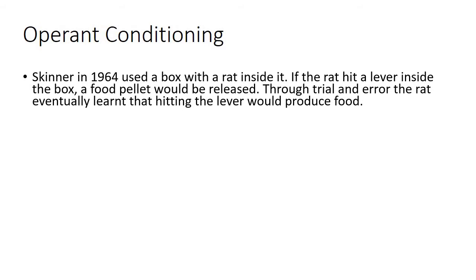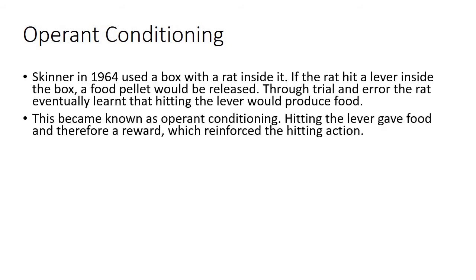So we're going to look at each of these learning methods in isolation. The first one is operant conditioning. In 1964, Skinner used a box with a rat inside it to work out operant condition learning. If the rat hit a lever inside the box, a food pellet would be released. Through trial and error the rat eventually learned that hitting the lever would produce food. This became known as operant conditioning. Hitting the lever gave food, and therefore the reward reinforced the hitting action, reinforcing their learning.